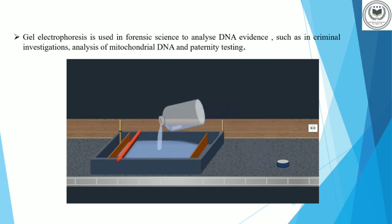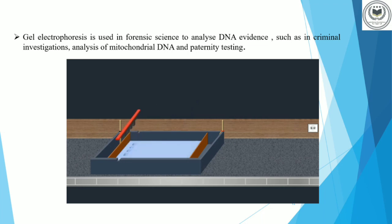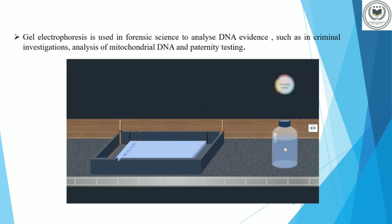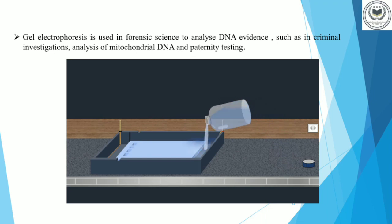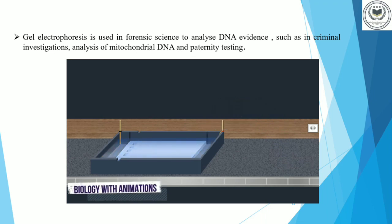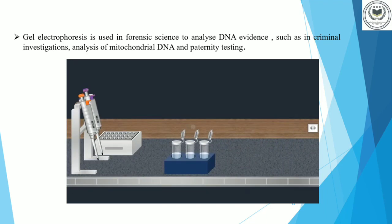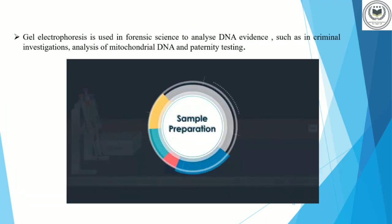The gel is allowed to solidify at room temperature. Once the gel has solidified, the comb is carefully removed, as well as the casting dams. Next, the gel is submerged in a TAE or TBE running buffer, which is used to provide ions that carry a current and to maintain the pH at a relatively constant value. After the preparation of the agarose gel, the next step is the preparation of the DNA samples.